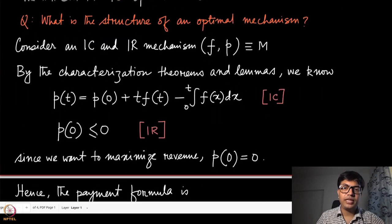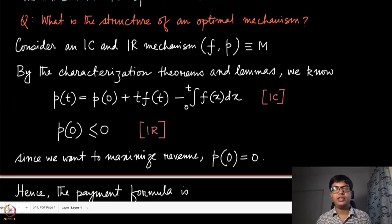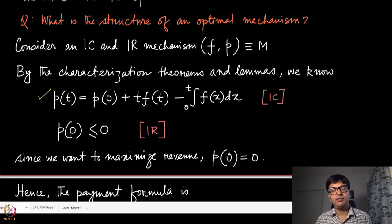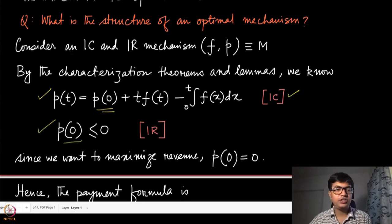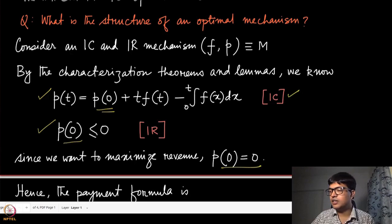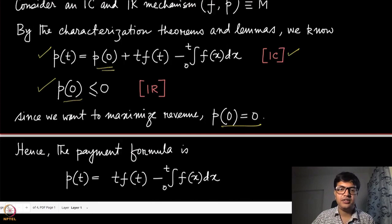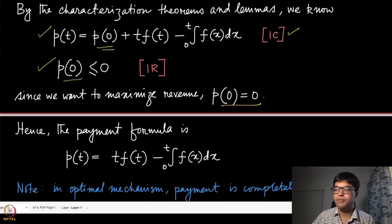What is the structure of the optimal mechanism? Since we are considering only IC and IR mechanisms — the basic requirements — we use the characterization theorems and lemmas seen before. The payment formula must follow an integral form for incentive compatibility, and for individual rationality, the constant p(0) must be non-positive. Since we are maximizing revenue, there is no reason to choose anything smaller than zero, so p(0) is exactly equal to zero.